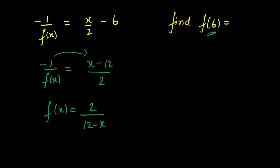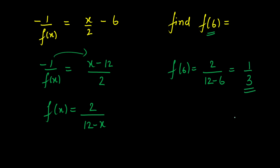The question asks for f(6). Substituting x = 6: f(6) = 2/(12 − 6) = 2/6 = 1/3. So the final answer is 1/3.